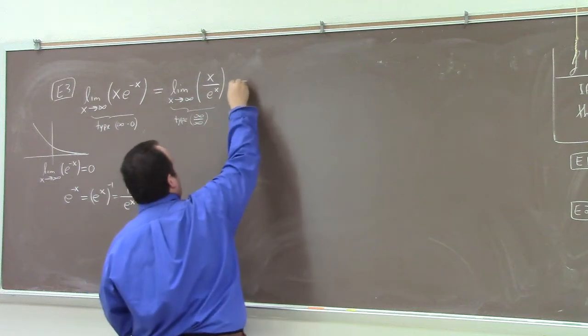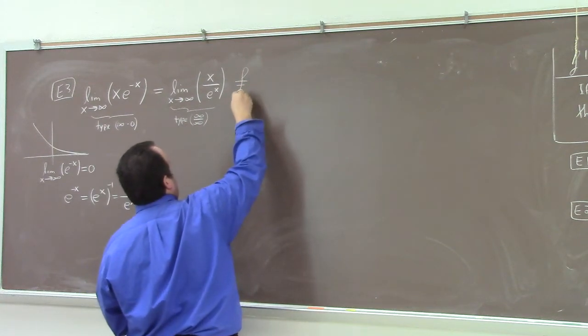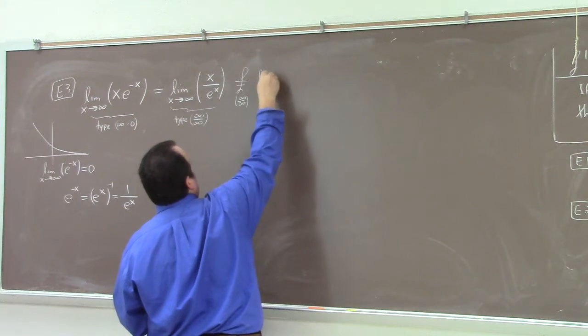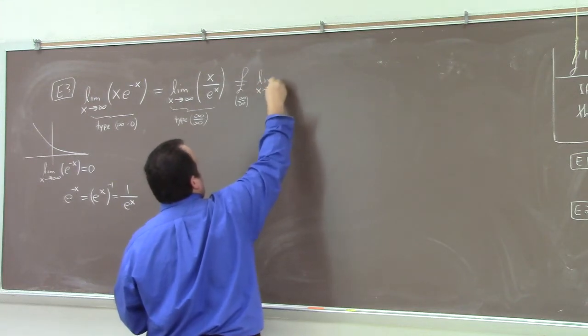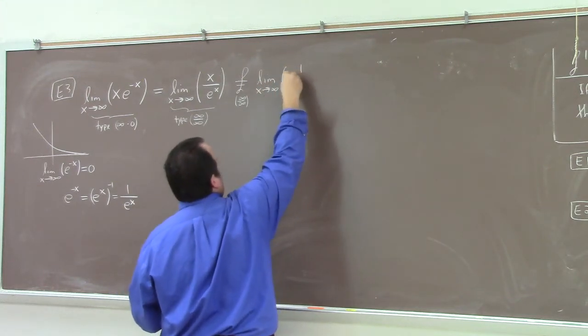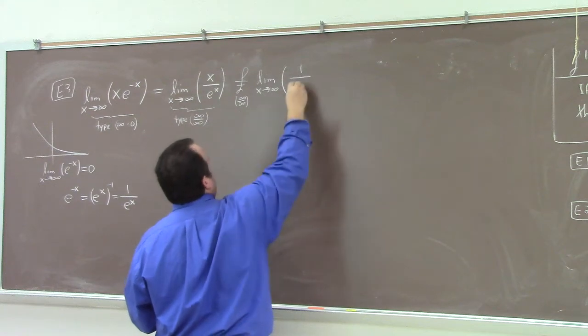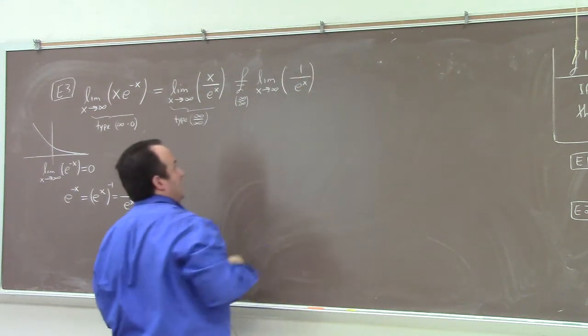I have now changed the indeterminate form from 0 times infinity to infinity over infinity. Aha! Well, happy day. Now we can use L'Hôpital's rule. So, L'Hôpital's rule, infinity over infinity, what do we have? What's the derivative of x? 1. What's the derivative of e to the x? e to the x. What's this limit equal to?